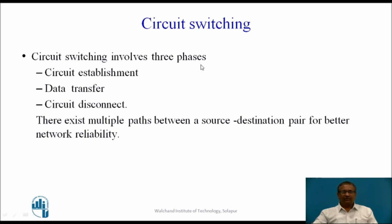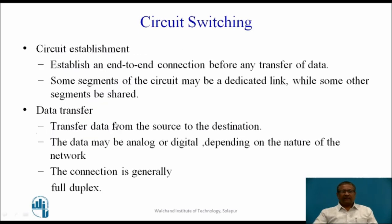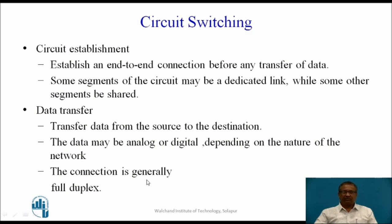Now let us see how circuit switching works. Circuit switching involves three phases. First, circuit establishment. Second, data transfer. And third, circuit disconnect. These are the three steps required for circuit switching to transfer data from source to destination. There are multiple paths from source station to destination, which allows us to improve the reliability of the network. Circuit establishment is done before actual data transfer, and the circuit switching concept remains the same for analog data as well as digital data.